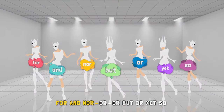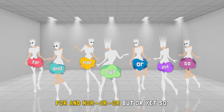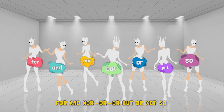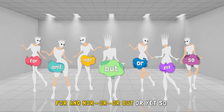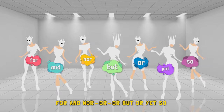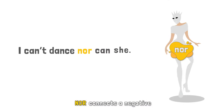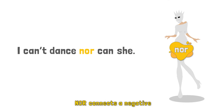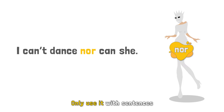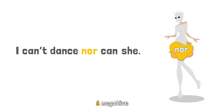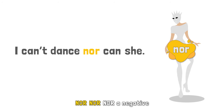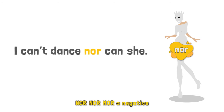For and nor, but oh yet so, for and nor, but oh yet so. Nor connects a negative — only use it with sentences. A negative: nor, nor, nor a negative.